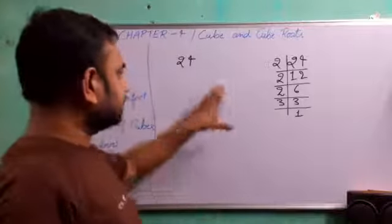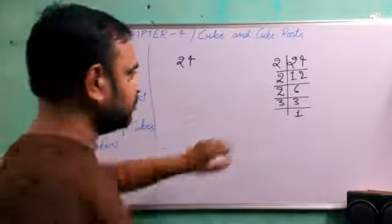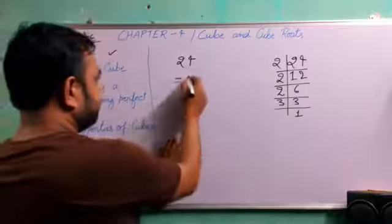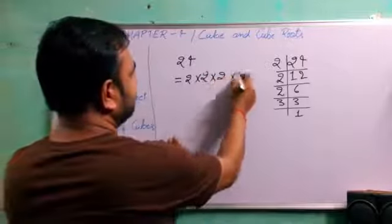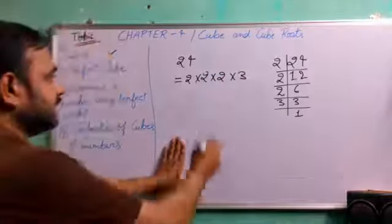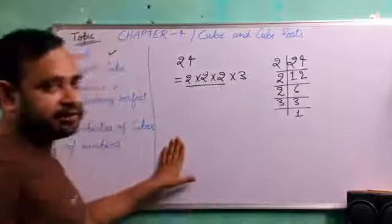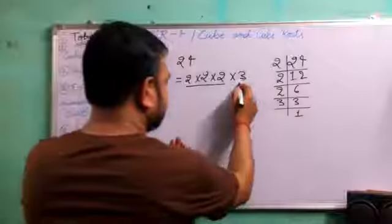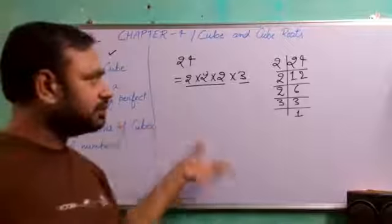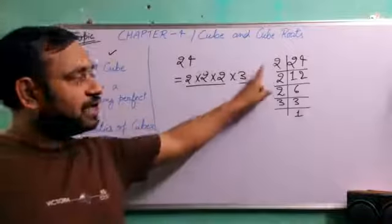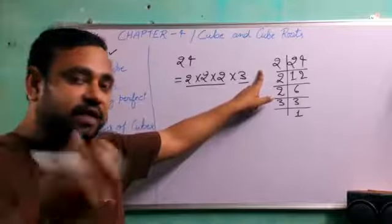Now we see that we have got 2, 2, 2 and 3. So 24 can be factorized as 2 multiply 2, multiply 2, multiply 3. Here we can see that number 2, 3 times but number 3 is only 1 time. In a perfect cube, whenever you will do the prime factorization, you will get any number at least 3 times or the multiple of 3 times.